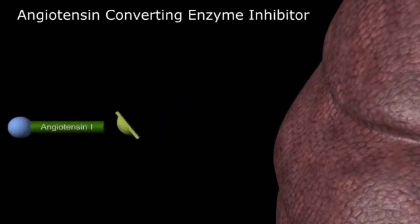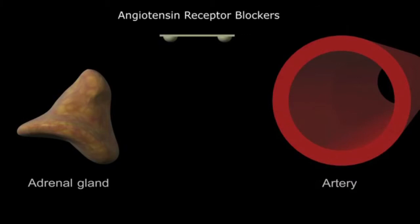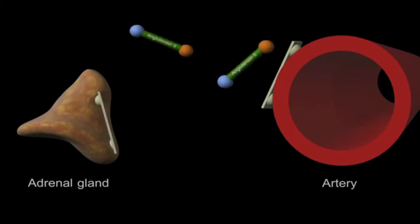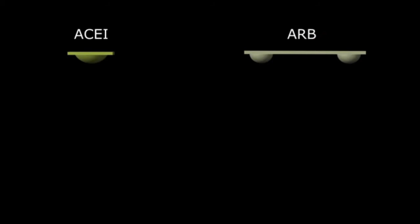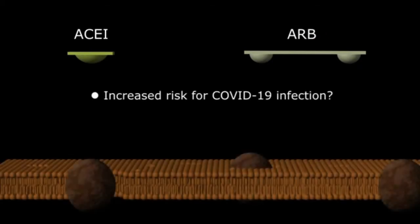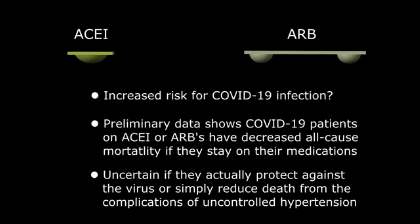ACEIs block angiotensin-converting enzyme from transforming angiotensin-1 to angiotensin-2. ARBs work further down the line, blocking angiotensin-2 from binding to its receptors on blood vessels and adrenal glands. During the early days of the pandemic, there was concern that both ACEIs and ARBs could increase viral infection risk by upregulating ACE2 surface protein expression. However, preliminary data showed the opposite — COVID-19 patients on ACEIs or ARBs had decreased all-cause mortality if they stayed on their blood pressure medications, though whether this lessens infection impact or prevents hypertension complications remains unclear.